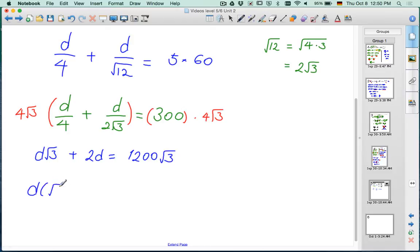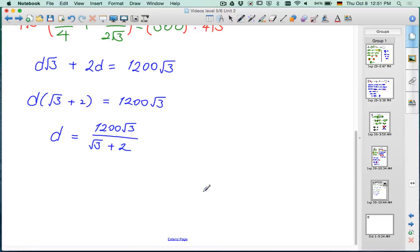So it'll be square root of 3 plus 2. And now you can easier see that in order to solve for d, the inverse of multiplying is divide, so we can divide each side by root 3 plus 2. And we're done. No, we're not. What about this root 3?